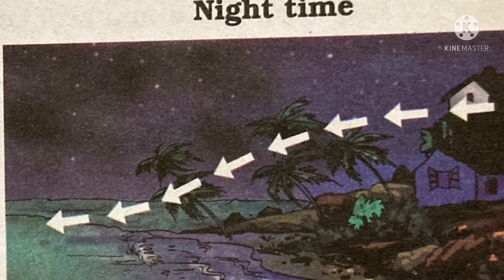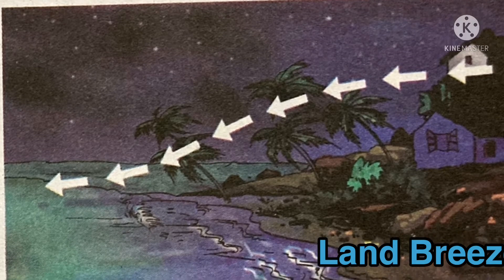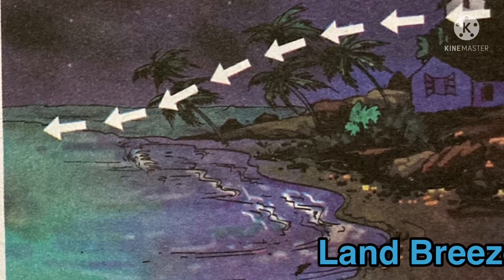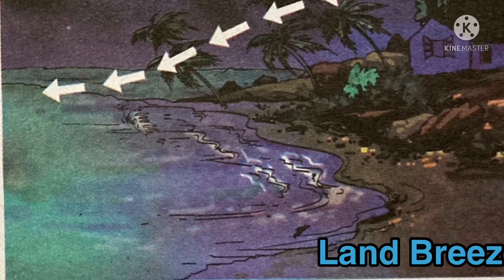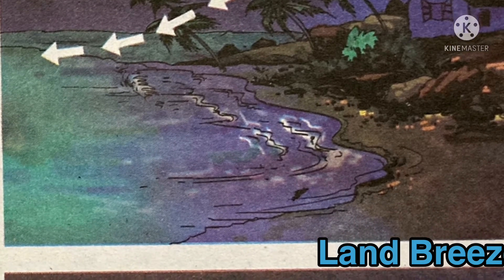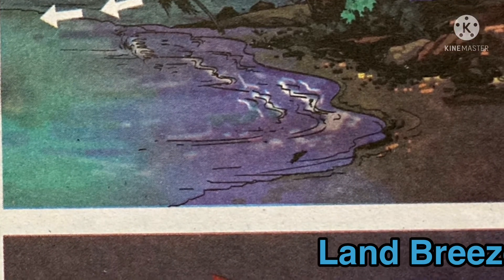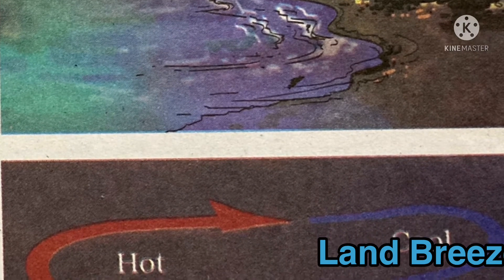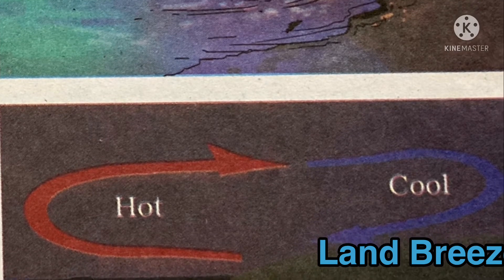At night, the water cools down more slowly than the land. So the cooler air from the land moves towards the sea. This is called land breeze. The figure shows this phenomenon.